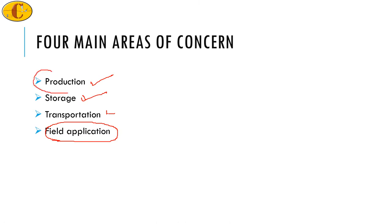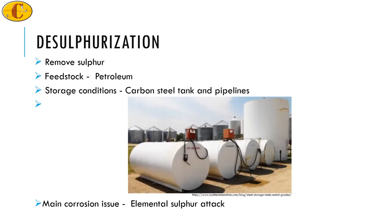Let's start with the production stage. In the production stage there are a few more sub-steps. The first step in production usually starts with desulfurization. The motive of desulfurization, as the name suggests, is basically to remove the sulfur. So where does this sulfur come from?